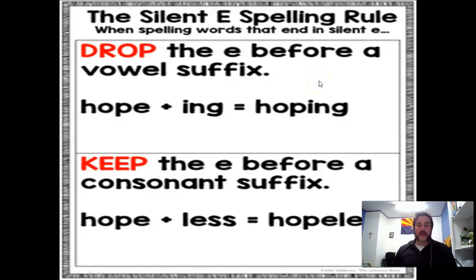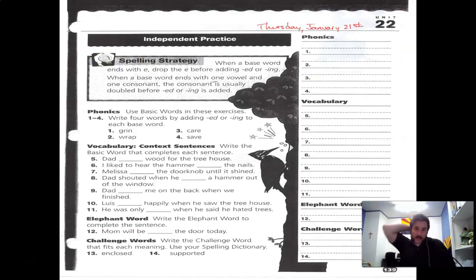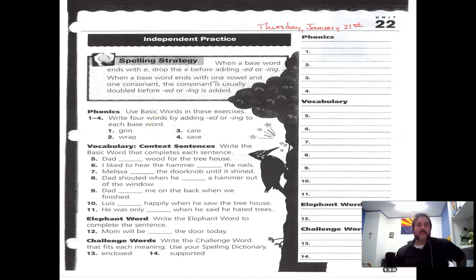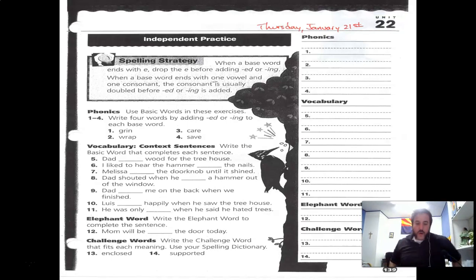So when dealing with suffixes that begin with vowels like -ing and -ed, you're going to kick out the E. Sorry, E — that's your favorite vowel, but that's how it works. For today's assignment, numbers one through four have you write four words by adding -ed or -ing. You need to use all the knowledge from the whole week — do you drop the final E, or do you double the consonant? You can try it without the book, but I'd suggest checking your answers with the book to make sure you get it right.